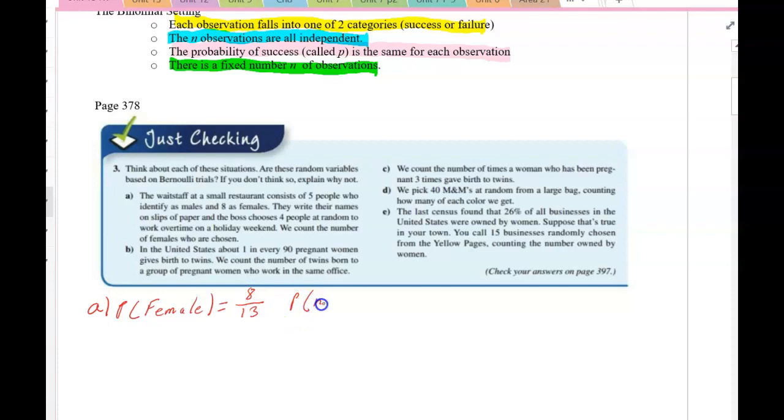The probability that the next person is a female is going to change because we already picked a female. So it will either be 8 out of 12 or 7 out of 12, depending on who was chosen first. So these events are not independent.